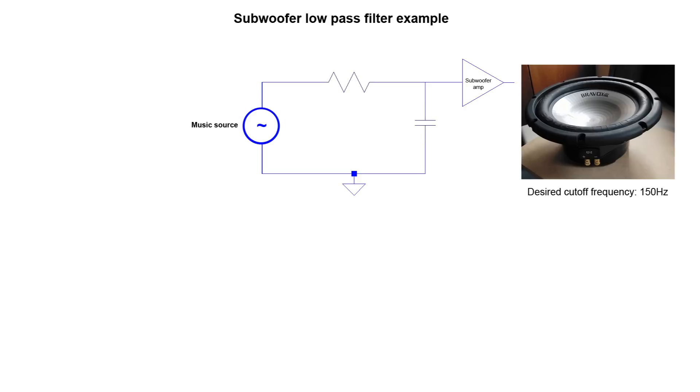Let's say I want a low-pass filter that goes before a subwoofer's amplifier, to make sure that the woofer is only outputting really low bass frequencies. Let's say I want a cutoff frequency of about 150 Hz.